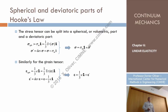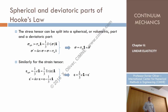For the strain tensor, we can do the same decomposition. The coefficient that multiplies the identity turns out to be one-third of the trace. Since the trace is the volumetric deformation, this is one-third of E, where E is the scalar representing the trace of epsilon — the volumetric deformation — plus the spherical part.